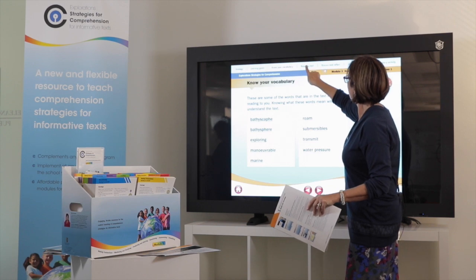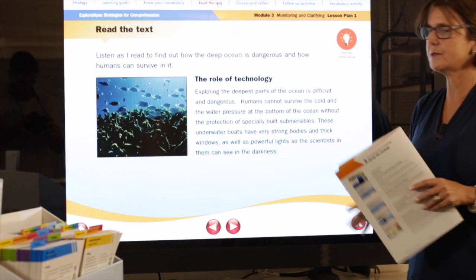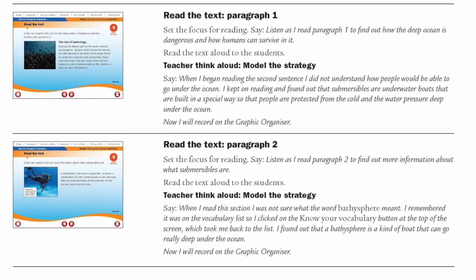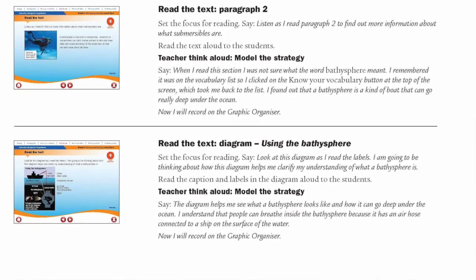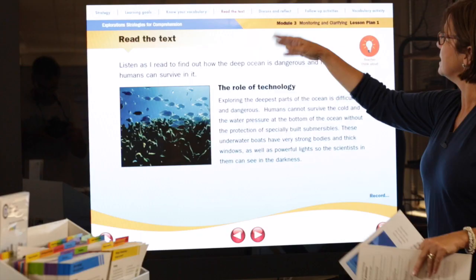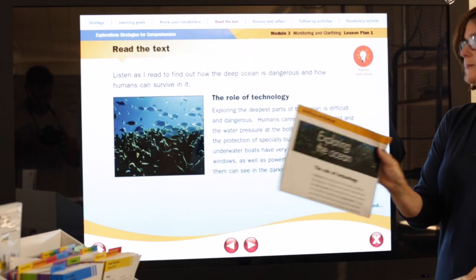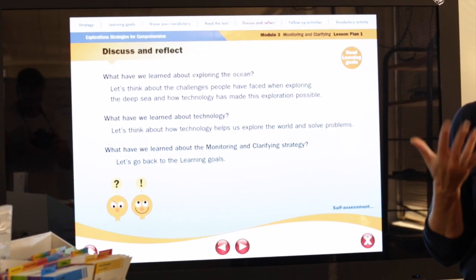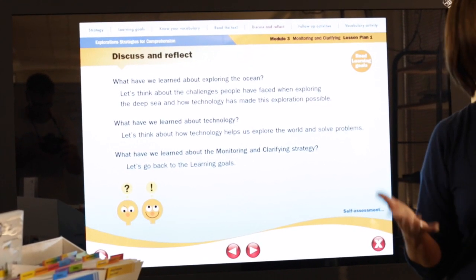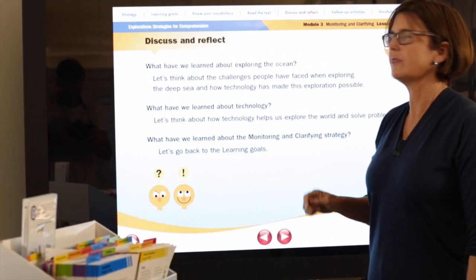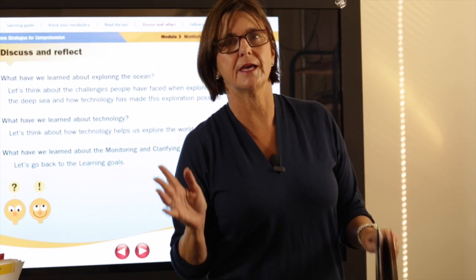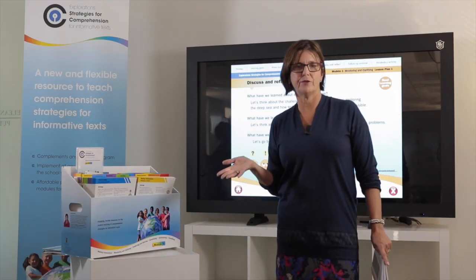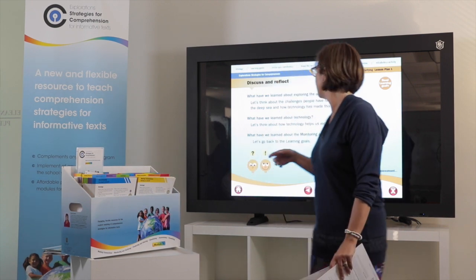On the digital version, clicking 'Read the Text' brings up the first part of the text, divided into chunks — we take students through paragraph by paragraph, looking at visuals, text structure, and reading to ask specific questions. Once through the entire text, either digitally or using the poster, we go to the 'Discuss and Reflect' section. Students have ample opportunity to talk about the content — exploring the ocean — the key concept of how technology helps explore the world, and what they've learned about monitoring and clarifying.